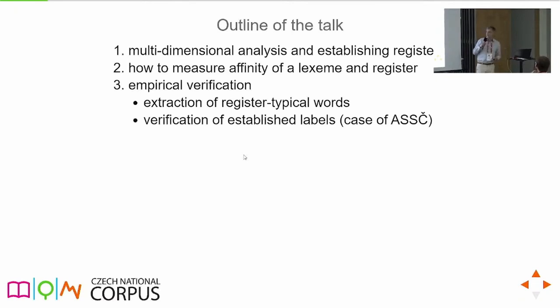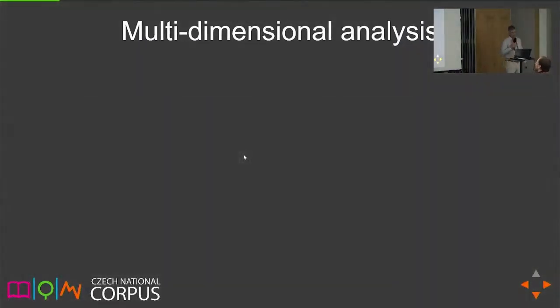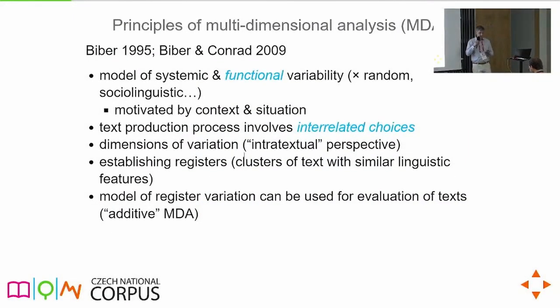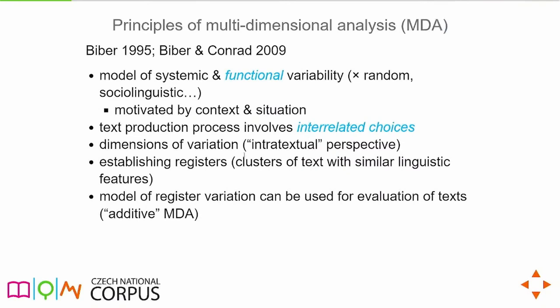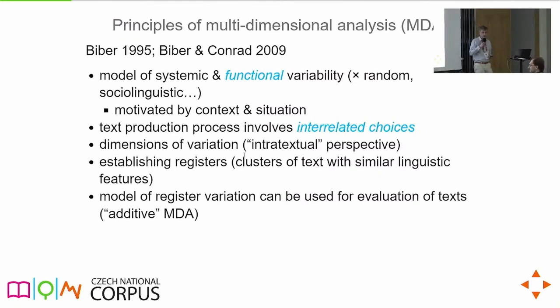Multidimensional analysis is connected to the name of Doug Biber, who started it back in the 1980s. It is the approach to model systemic and functional variability apart from random sociolinguistic variability. This functional variability should be motivated by context or situation. It stems from the assumption that the text production process involves interrelated choices: when we choose one linguistic item, we are forced to choose another. For example, passives are closely connected to a particular kind of situation, and the usage of other formal means are also connected to passives.